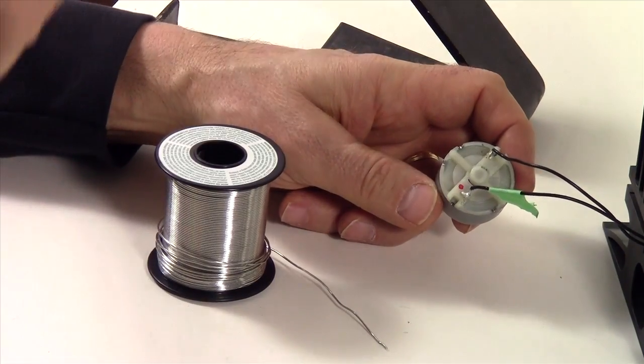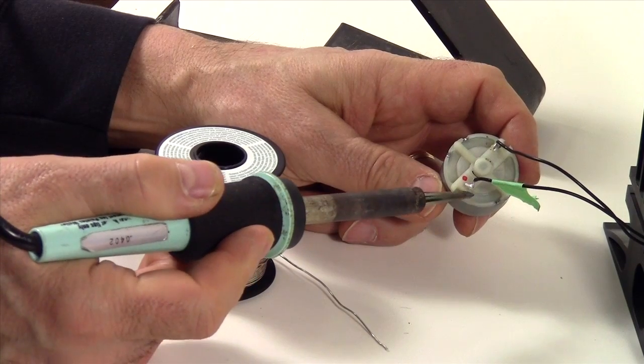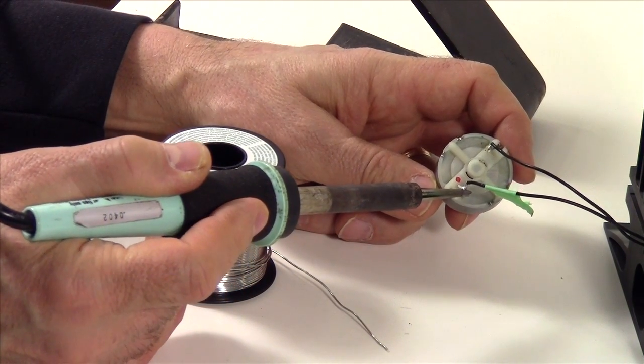Now we're going to use our soldering iron to remove or unsolder the wires.